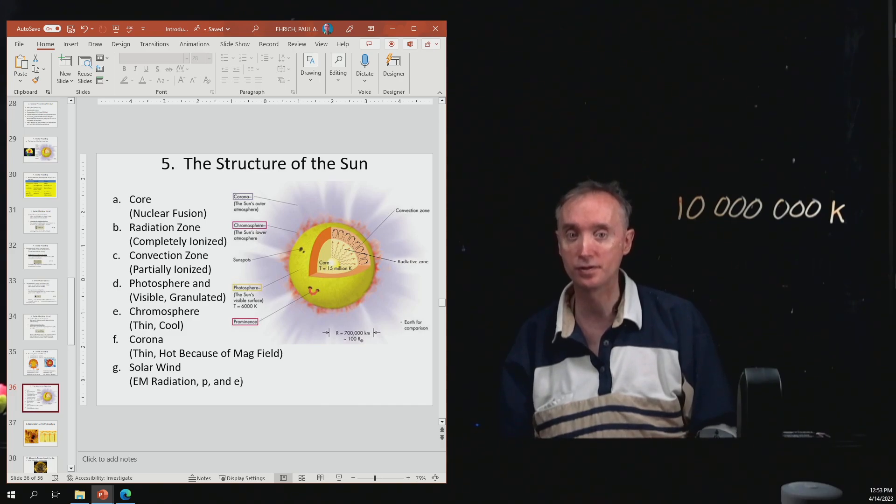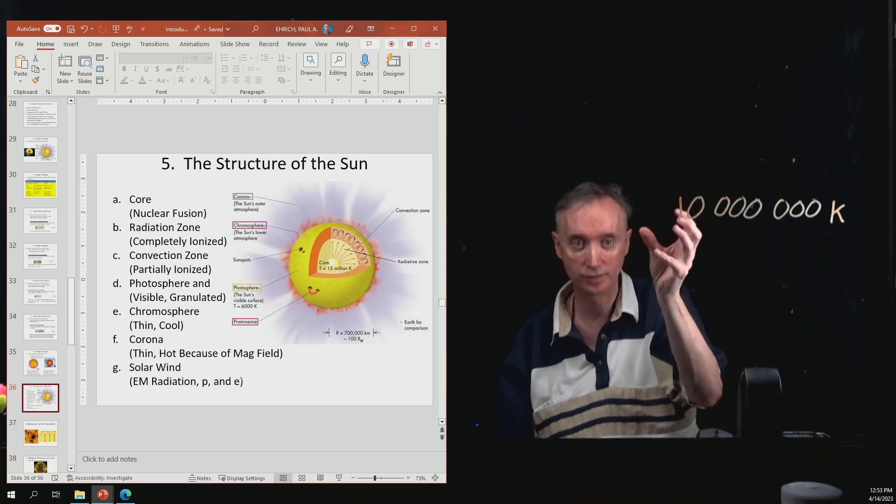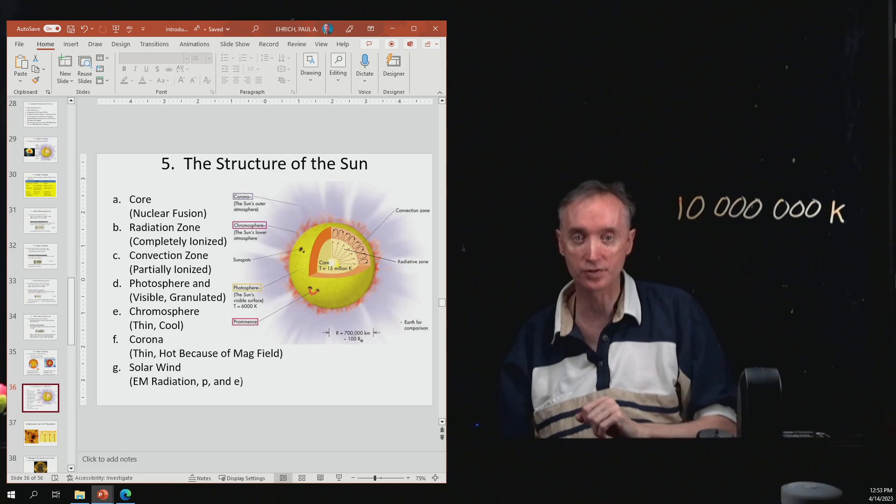So the photosphere is the visible part of the Sun. So if you were to look at the Sun, don't look at the Sun. But if you were to look at the Sun, you would be looking at the photosphere. So that yellow thing, the yellow ball, you're looking at the surface of the Sun, which is the photosphere.